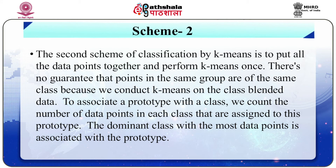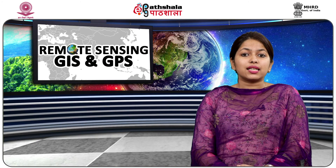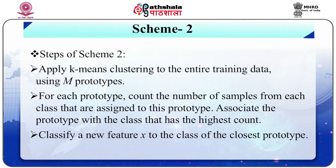Now we will discuss scheme 2. The second scheme is to pool all the data together and perform k-means once. There is no guarantee that points in the same group are of the same class since k-means is conducted on class-blended data. To associate a prototype with a class, we count the number of data points in each class assigned to that prototype. The dominant class with the most data points is associated with the prototype. During classification of a new data point, the procedure goes the same way as in scheme 1. Steps for scheme 2: apply k-means clustering to the entire training data using m prototypes; for each prototype, count the number of samples from each class assigned to it; associate the prototype with the class with the highest count; then classify a new feature vector x to the class of the closest prototype.